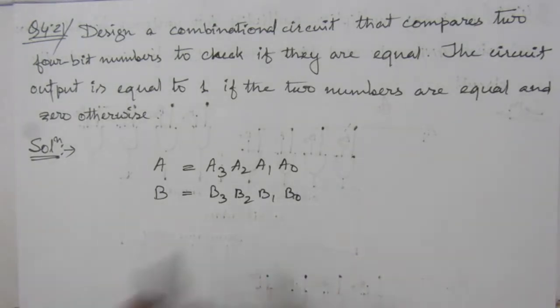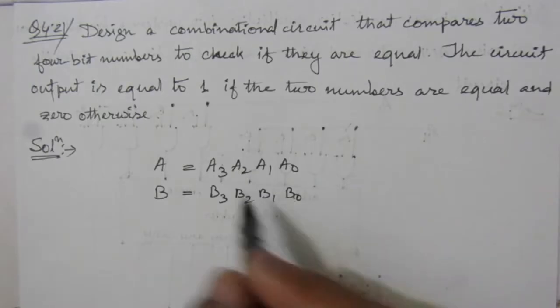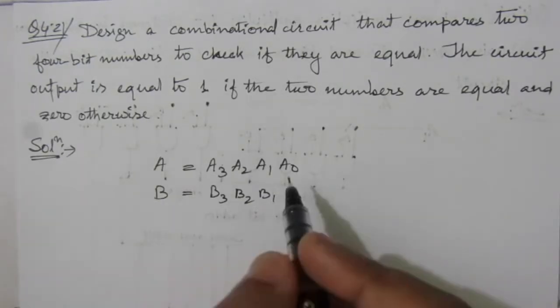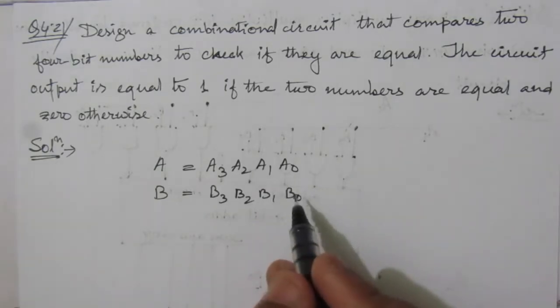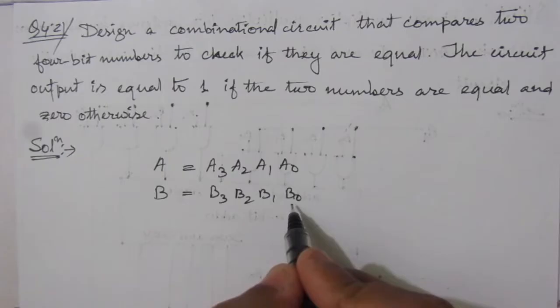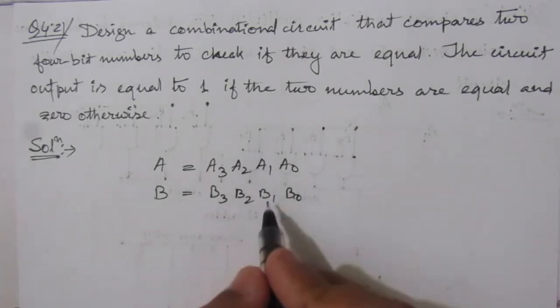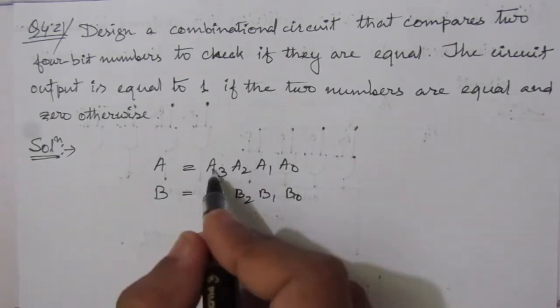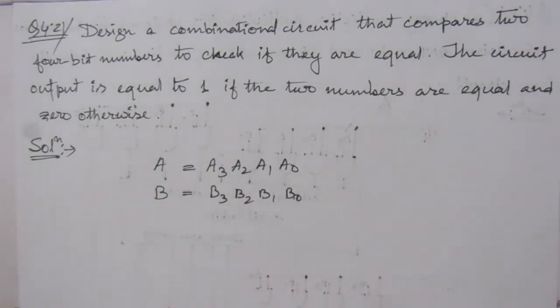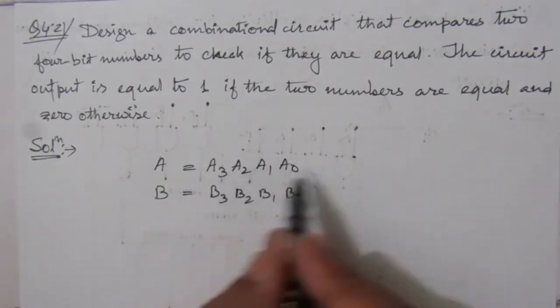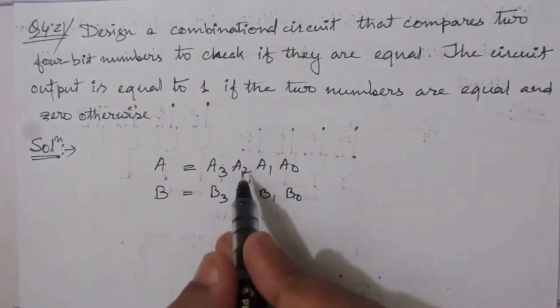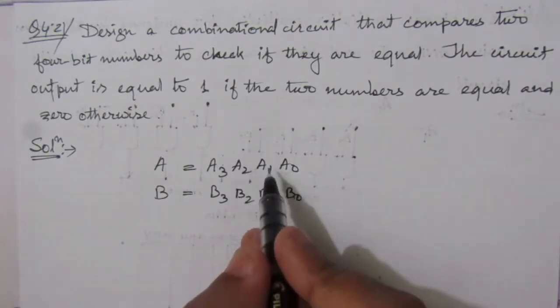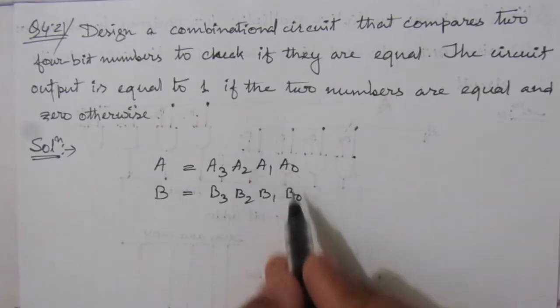So here we have to compare these two numbers. We can understand that these two numbers will be equal whenever each bit and its respective bit are equal. That means A0 should be equal to B0, A1 should be equal to B1, A2 equal to B2, A3 equal to B3. And you have to keep in mind that all of the 4 bits should be equal. That means A3 should be equal to B3, and A2 equal to B2, and A1 equal to B1, and A0 equal to B0.